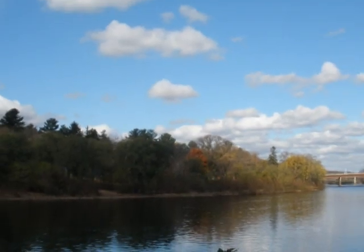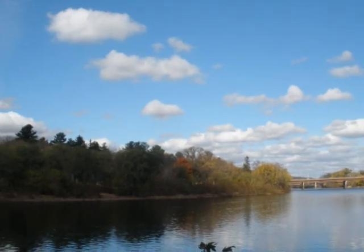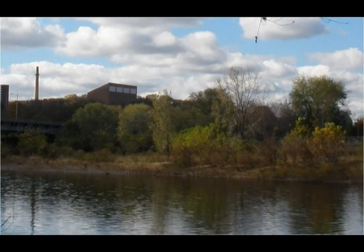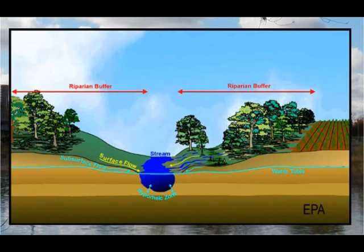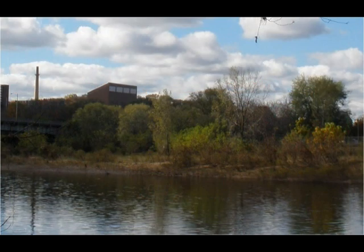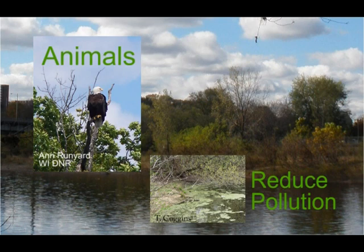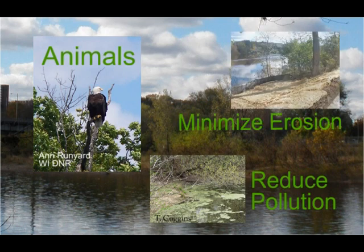The trees, shrubs, and other plants that grow along the banks of a river are called riparian vegetation. Areas of riparian vegetation that cover a significant portion of land adjacent to the river can be considered a riparian buffer. Riparian buffers play an important role in maintaining wildlife and water quality by providing shelter for animals, reducing river pollution, and minimizing erosion.